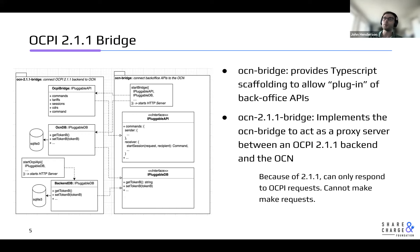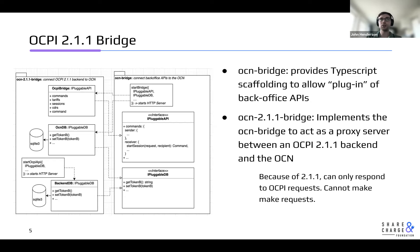The 2.1.1 bridge allows existing 2.1.1 backends to use the OCN without necessarily requiring the 2.2 functionality. Because of that, there are some limitations — it's only possible to respond; it's not possible to make an OCPI request using the 2.1.1 bridge. But there is potential to work around that, perhaps using the token B as a way of addressing requests, and it would be possible to improve the 2.1.1 bridge as well.